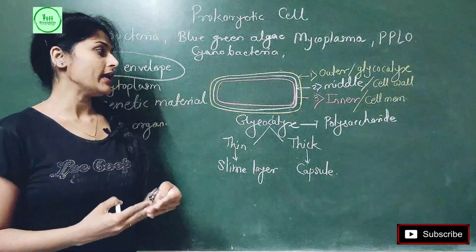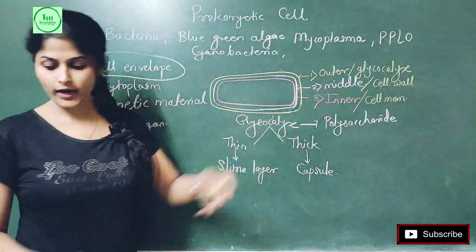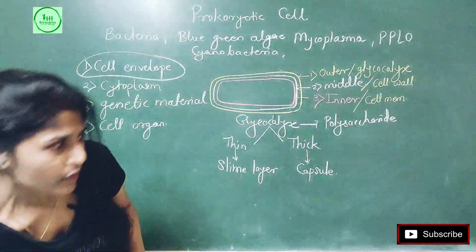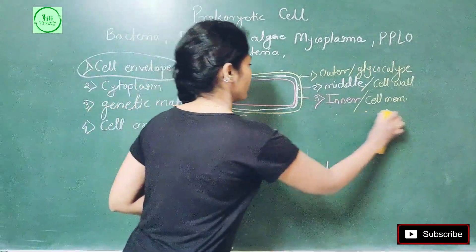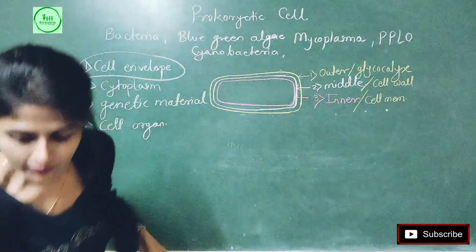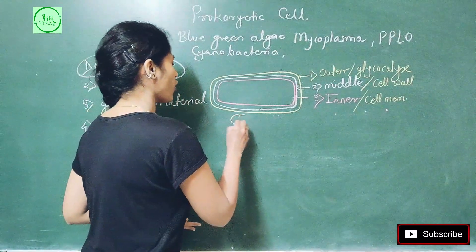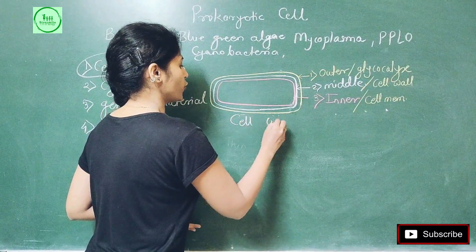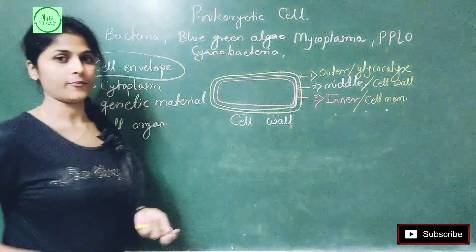Inside the glycocalyx there is the cell wall. We know that plants have a cell wall made up of cellulose, but the bacterial cell wall is different. This bacterial cell wall is rigid in nature — meaning non-elastic, non-flexible.